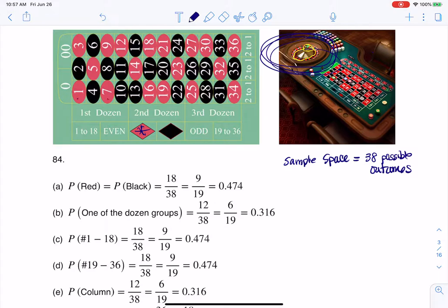There are, if I go through here and count all the red numbers, give me a sec, nailed it, there we go. There are 18 of them out of 38 possible. And that's the same number for betting on black. There are 18 black numbers out of 38.